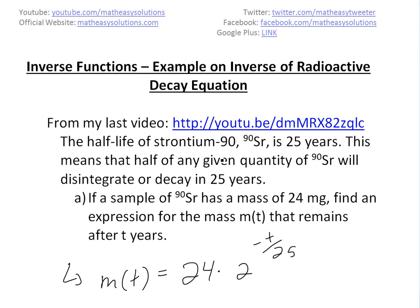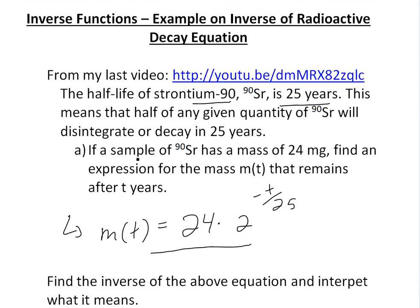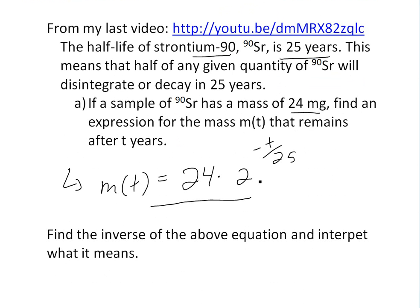I went through an example on the half-life of Strontium-90, which is 25 years, and found an exponential equation for the decay. If the half-life is 25 years, half of any given quantity will disintegrate in 25 years. Part A says: if a sample of Sr-90 has a mass of 24 mg, find an expression for the mass m(t) that remains after t years. This is the exponential function we got.